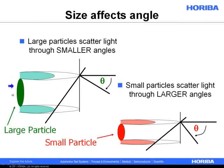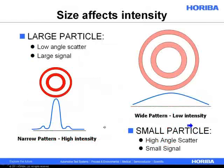The size of the particle, or the size of the slit, also affects the angle at which the light is scattered. A larger particle will scatter at narrower angles than a smaller particle, which will scatter at a wider angle. That's a fundamental relationship: the size of the particle is related to the angle of scatter, and it's also related to the intensity of scatter.